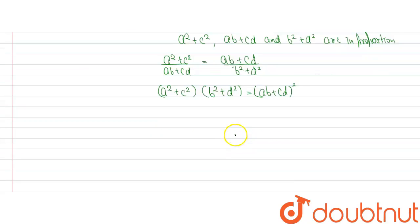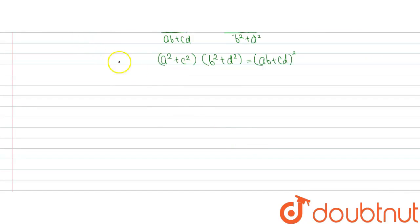So now we solve further and we will get a²b² plus a²d² plus b²c² plus c²d² which is equal to a²b² plus c²d² plus 2abcd.